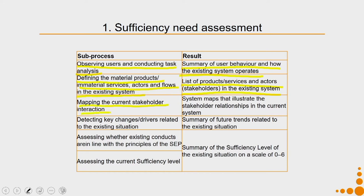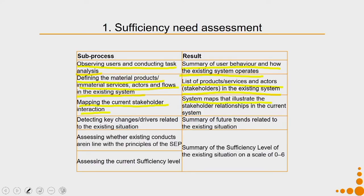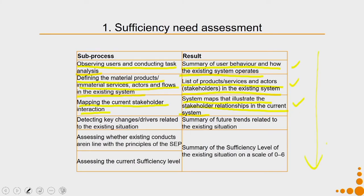Then we map the current stakeholder interactions — how one stakeholder interacts with another. For example, how the visitor who has come on a touristic journey interacts with the resort staff, or how that person interacts with the farmer in the resort growing the food, or how the farmer from the local community interacts with the resort. We map all current stakeholder interactions — a systems map that illustrates the stakeholder relationships in the current system. There are specific worksheets which have been developed to help you do all these activities, keeping in mind the sufficiency economy philosophy.